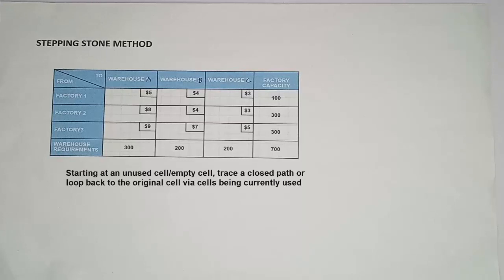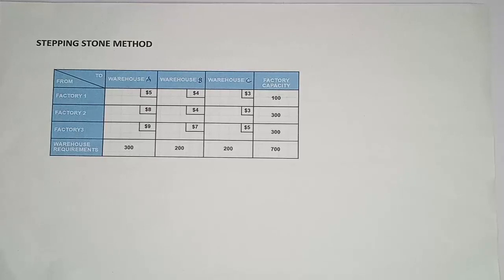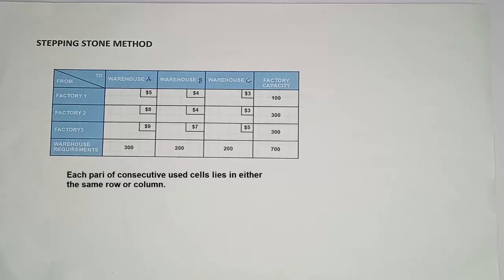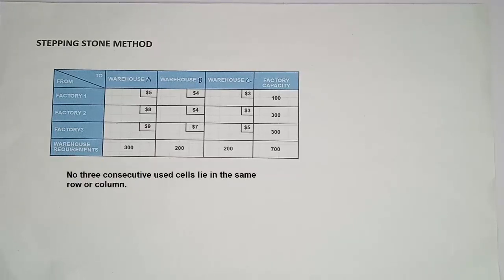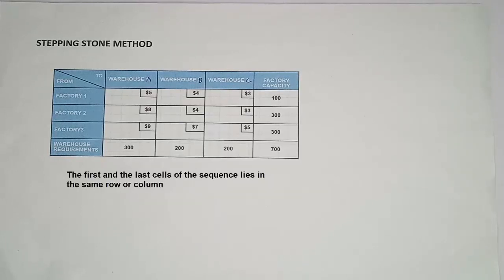There are several steps involved in this method. Starting at an empty cell, trace a closed path or loop back to the original cell via cells that are currently being used or occupied. A closed path or loop is a sequence of cells in the transportation table such that the first cell is unused or empty and all other cells are used or occupied, with the following conditions: first, each pair of consecutive occupied cells lies in either the same row or column; second, no three consecutive occupied cells lie in the same row or column.